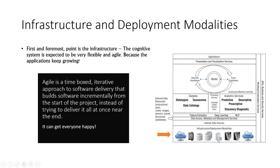The first and foremost point in any system you are building is the infrastructure. The cognitive system is expected to be very flexible and agile because the applications keep growing. Agile means flexible and iterative — it is a time-boxed iterative approach to software delivery that builds software incrementally from the start of the project instead of trying to deliver it all at once near the end, allowing changes as required to meet customer requirements.